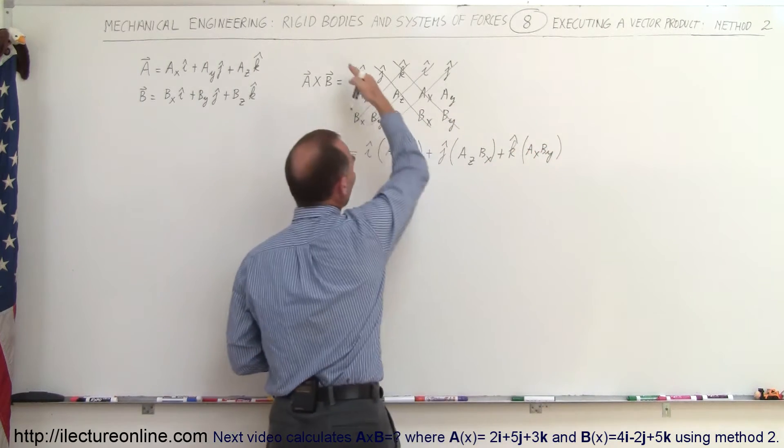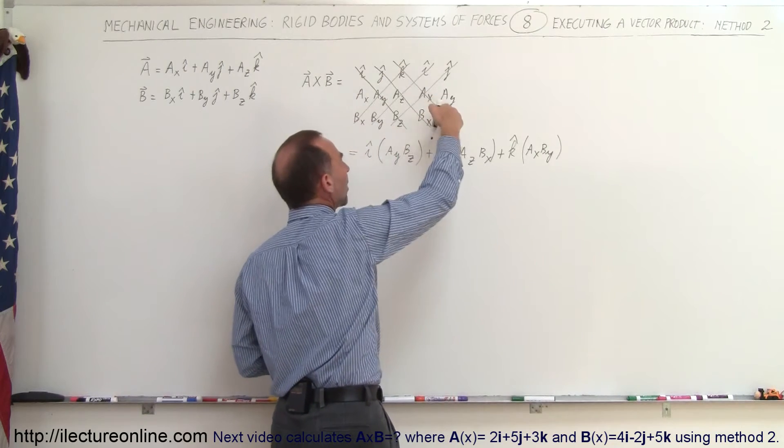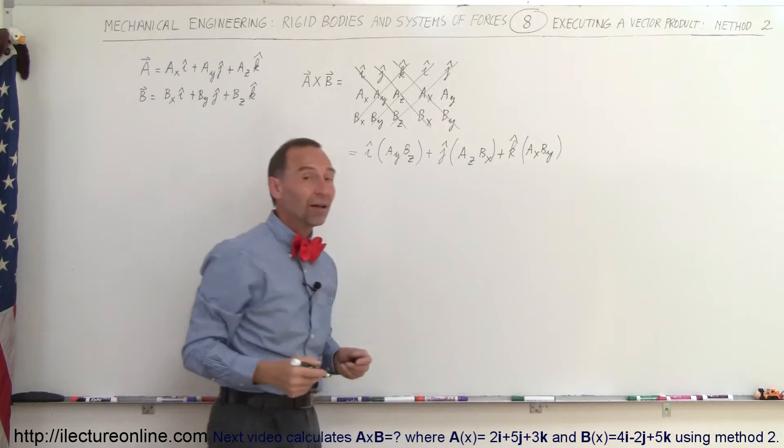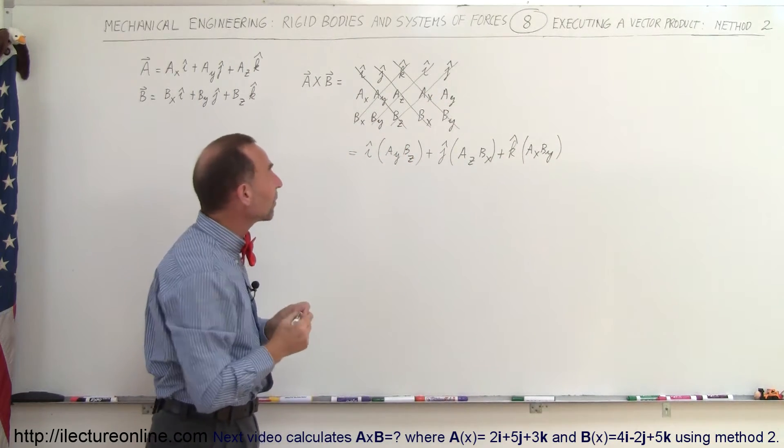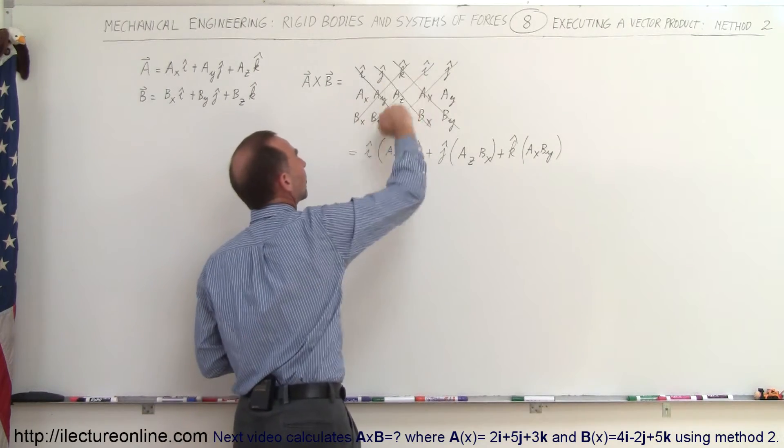So now we've multiplied all the diagonals in this direction and made them all positive. Now we're going to subtract from that all the products in the opposite direction.